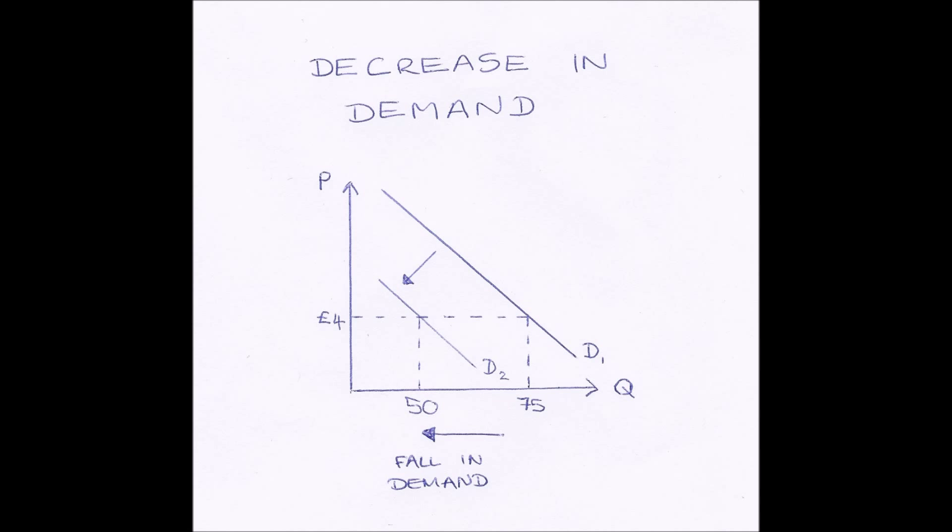And we show this by a shift left of the demand curve. And the way this results in a fall in demand is like so. So if the price of our good is £4, it always stays at £4. If we read across to D1, our original demand curve, our quantity demanded was 75 units.